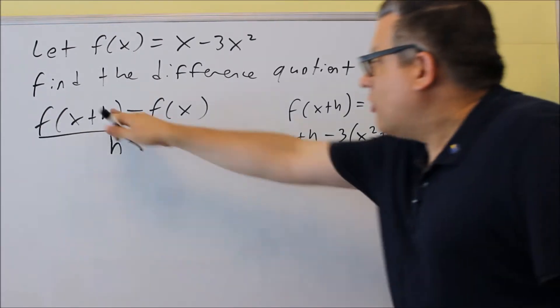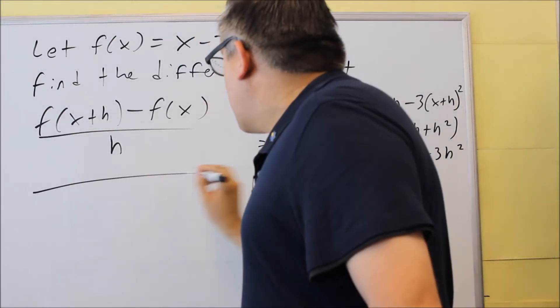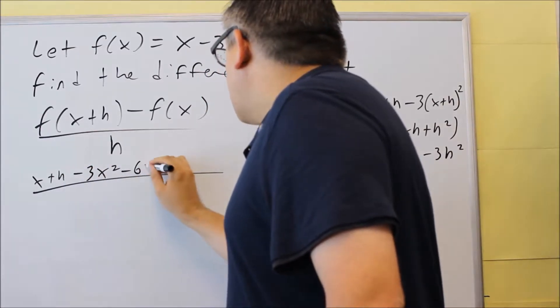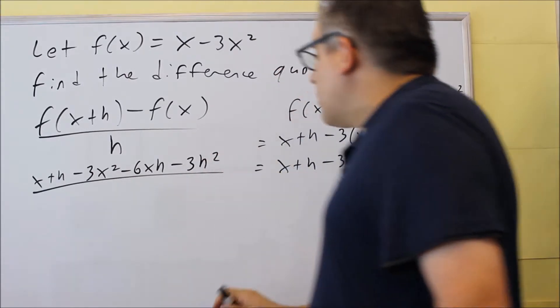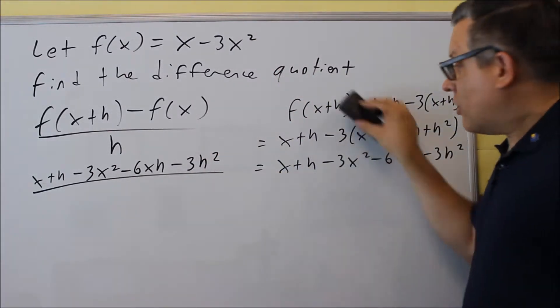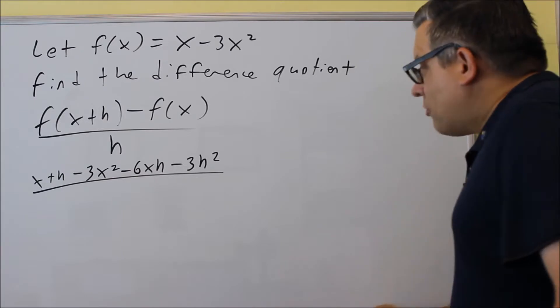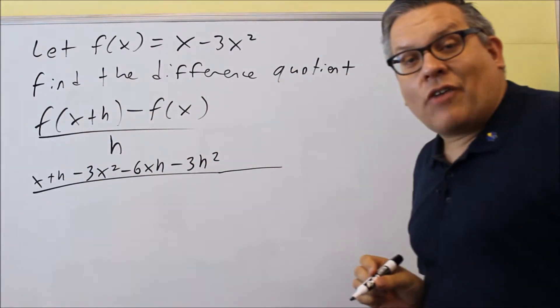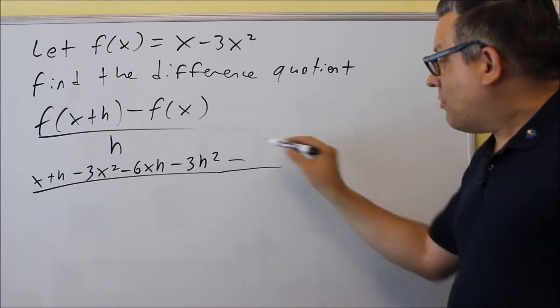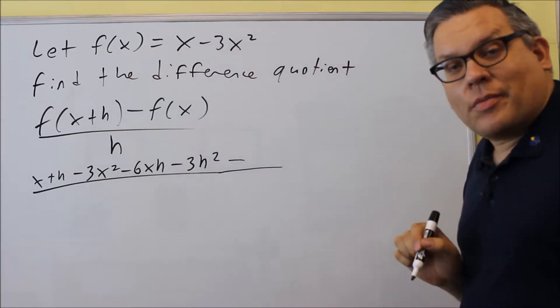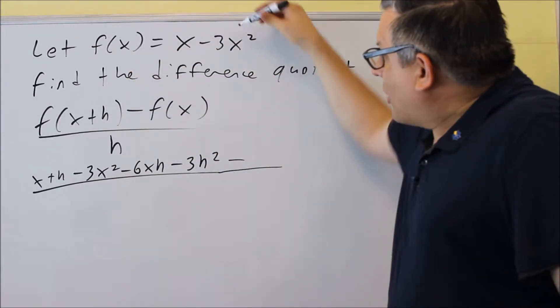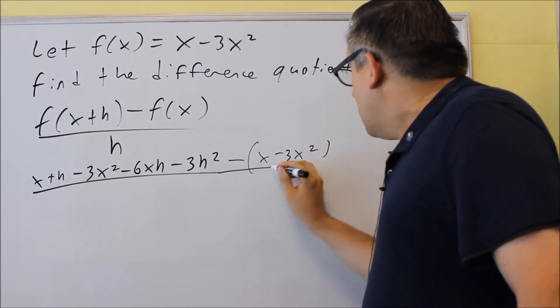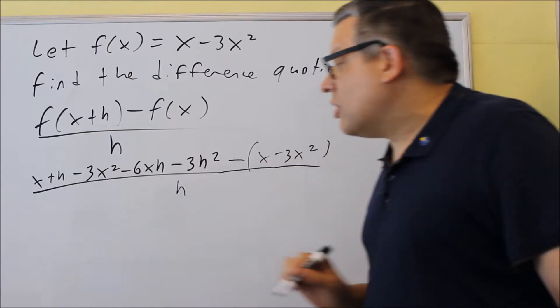So this whole thing right here, that's going to go in place of f(x+h). So I'm going to write x+h-3x²-6xh-3h². Now, this part that I did, that was only the first piece, f(x+h). I'm going to put a minus sign. That minus sign will represent this minus sign here. And then I want to put in f(x). Now, f(x) is just the original function. They gave us that one. So I have x-3x² going in after that. And all this is going to be over h.